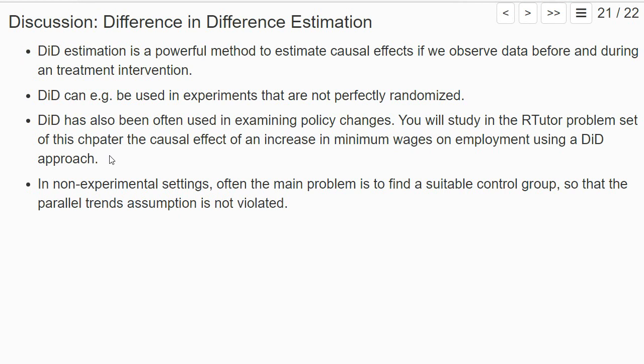To summarize the chapter: difference-in-differences estimation is a powerful and quite intuitive method to estimate causal effects. We need to observe data before and during the treatment intervention, and sometimes also afterwards. It can be used in experiments where assignment to the control and treatment group is not perfectly random — which is often the case, as certain restrictions may prevent perfectly random assignment. It can also be used in non-experimental settings to examine policy changes, sometimes called a natural experiment. For example, in the actual problem set you will estimate the causal effect of an increase in minimum wages on employment using a difference-in-differences approach.